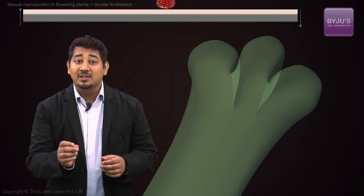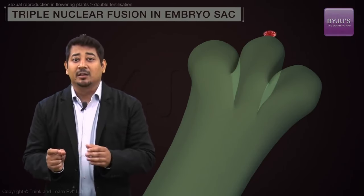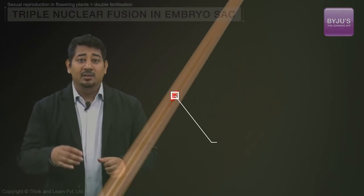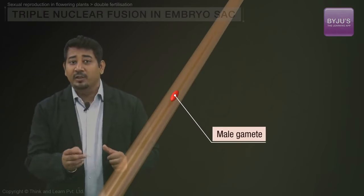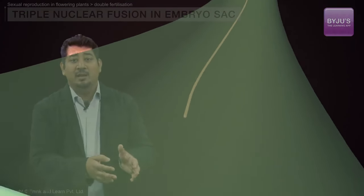Once a pollen grain lands on a compatible stigma, it starts germinating. This is marked by the growth of a pollen tube down the length of the style. The pollen tube carries the male gametes towards the embryo sac.